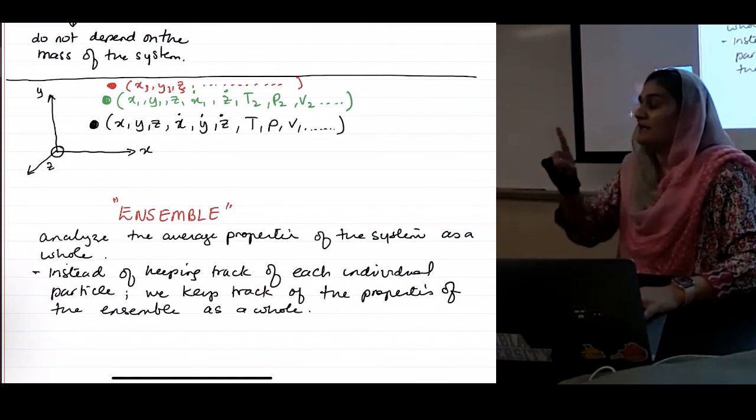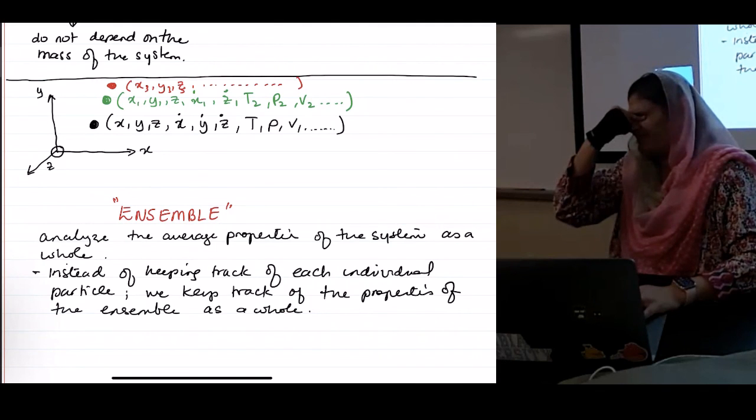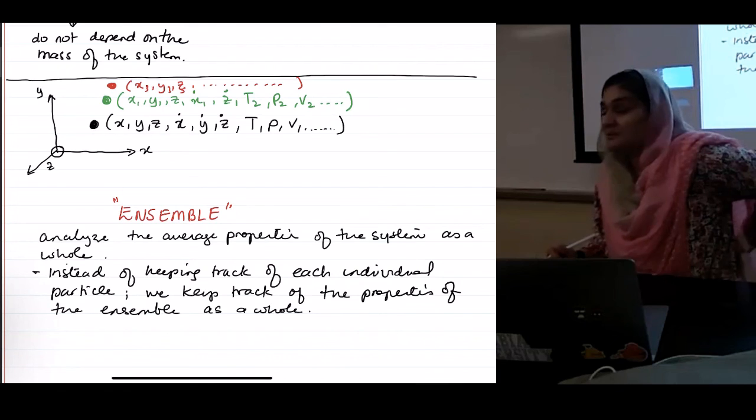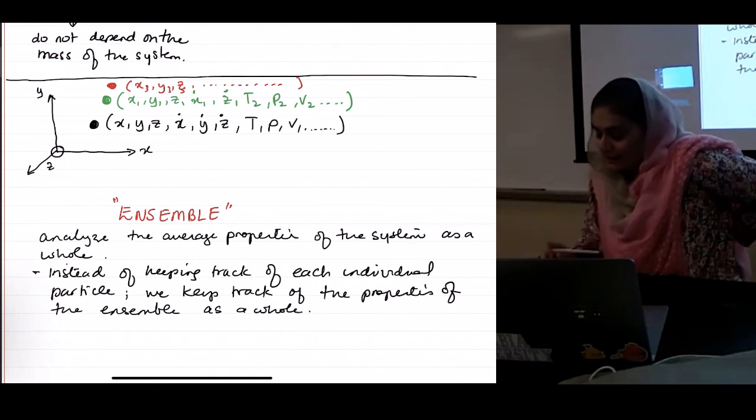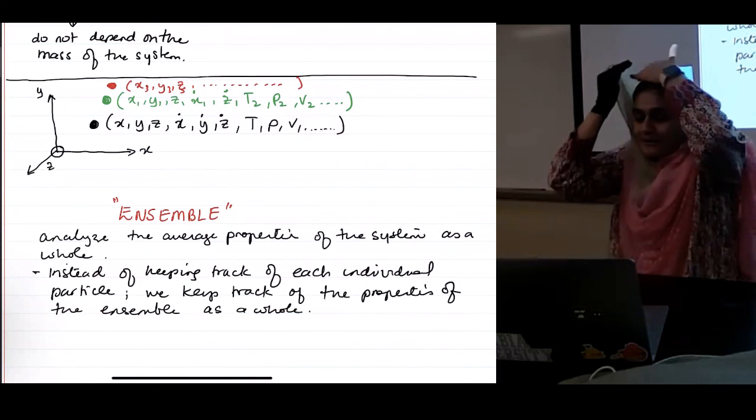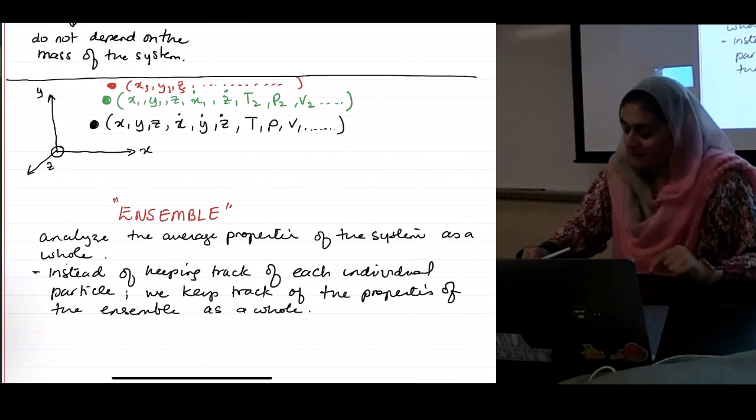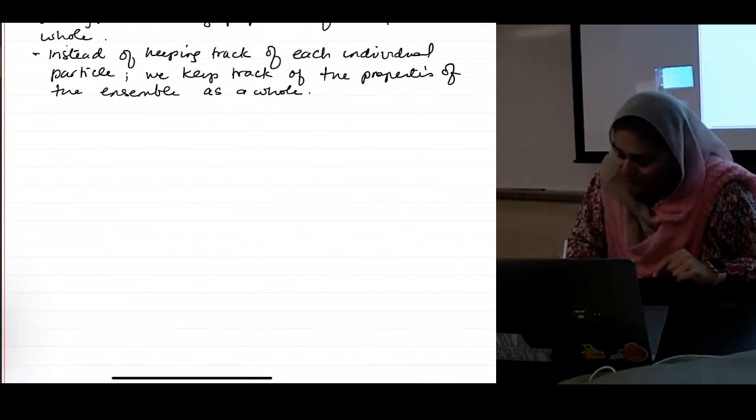So an ensemble is not necessarily every single point in space. It's just an average of everything. We will talk more about this when we get into statistical thermodynamics. Now, once we have established that, we now just have to define what do we mean by thermodynamical properties.